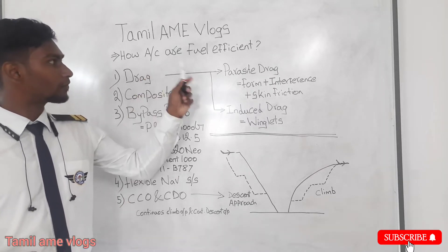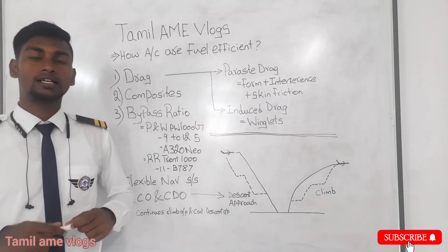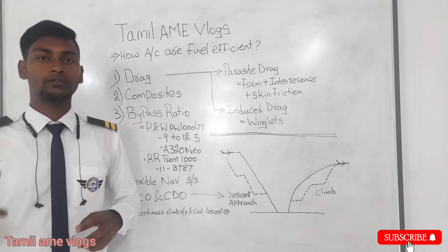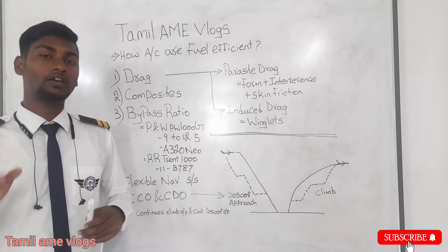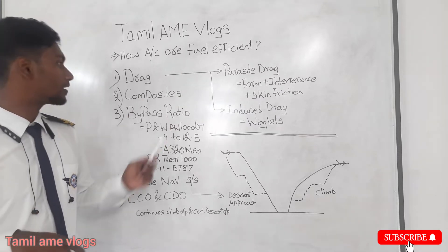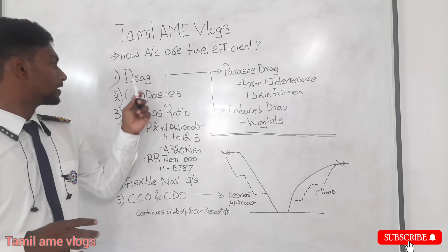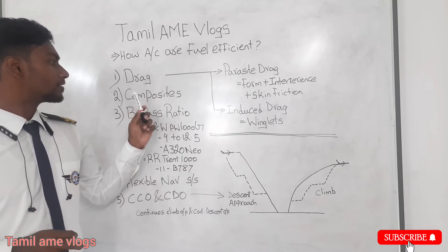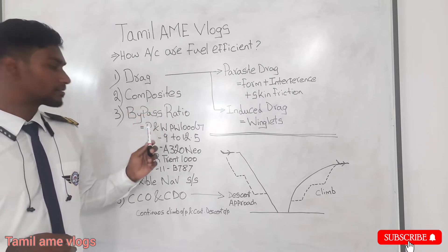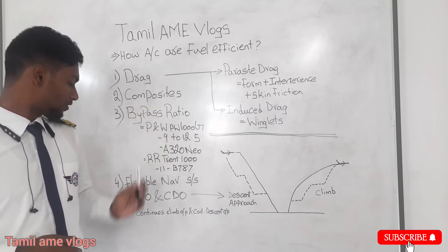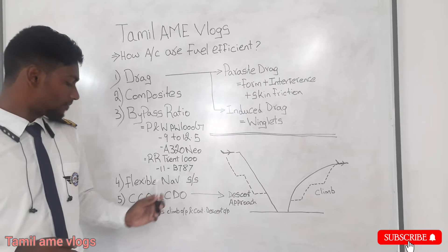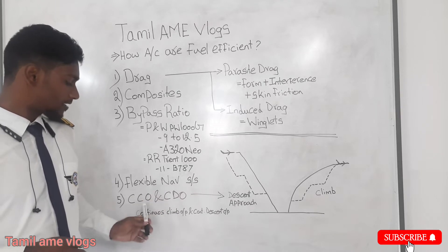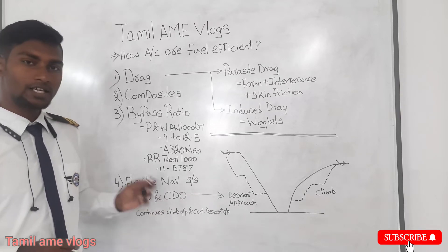How are aircraft fuel efficient? Aircraft are fuel efficient due to the following 5 reasons: drag, composite, bypass ratio, flexible navigation system, and CCO and CDO.